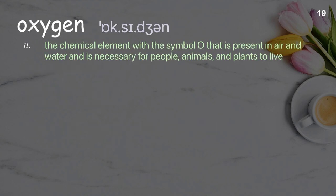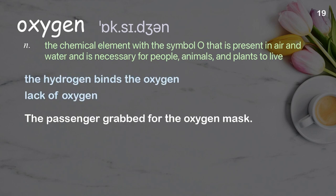Oxygen. The chemical element with the symbol O that is present in air and water and is necessary for people, animals, and plants to live. Examples: the hydrogen binds the oxygen, lack of oxygen. The passenger grabbed for the oxygen mask.